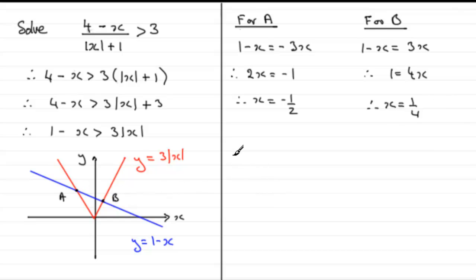So we've got our points for a and b. So when it comes to solving 4 minus x divided by the mod of x plus 1 is greater than 3, we're looking for values of x that are between a and b, where the blue graph is above the red graph. So x has got to be greater than minus a half, but less than a quarter.